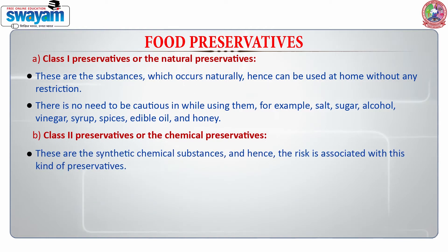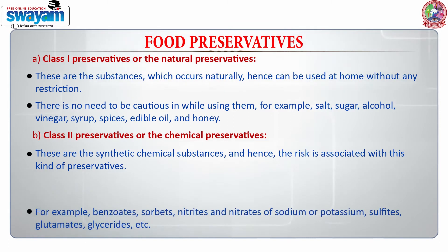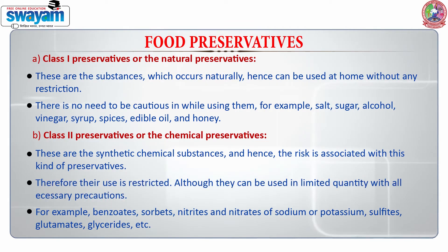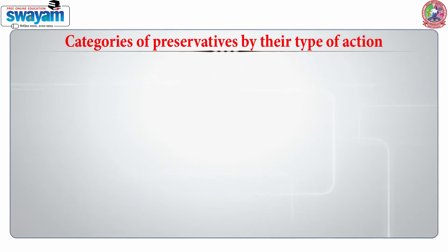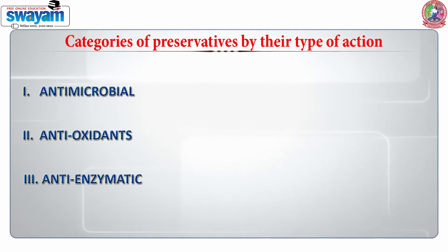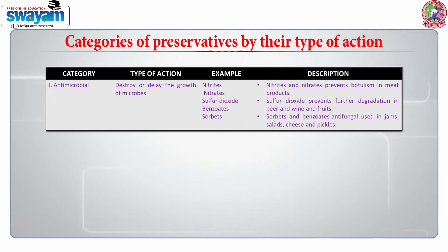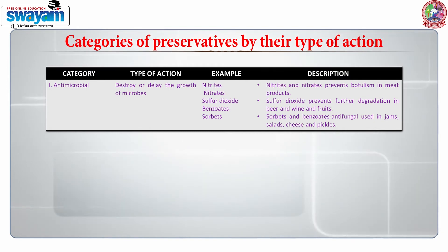Class 2 preservatives are chemical preservatives — synthetic chemical substances with associated risks, so their use is restricted and can only be used in limited quantities with all necessary precautions. Examples include benzoates, sorbates, nitrites, nitrates of sodium and potassium, sulfites, glutamates, and glycerides. There are three main categories of preservatives: category 1 antimicrobial, category 2 antioxidant, and category 3 anti-enzymatic. Category 1 antimicrobials destroy or delay the growth of microorganisms. Examples include nitrites, nitrates, sulfur dioxide, benzoates, and sorbates. Nitrites and nitrates prevent botulism in meat products; sulfur dioxide prevents further degradation in beer, wine, and fruits.